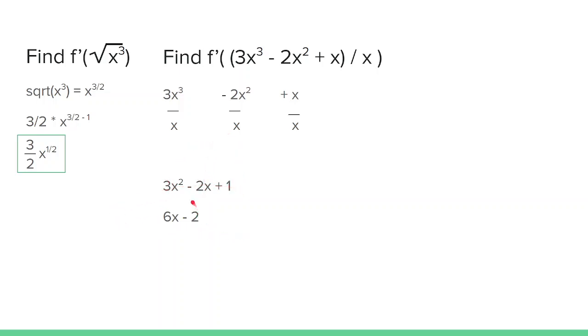The derivative of this, using the power rule: 2 times 3 is 6, subtract 1 from the exponent to get 6x to the 1st. For the second term, 1 times negative 2 is negative 2. 1 minus 1 is 0, so x to the 0th is 1, giving minus 2. The constant is 0. Your final answer is 6x minus 2.